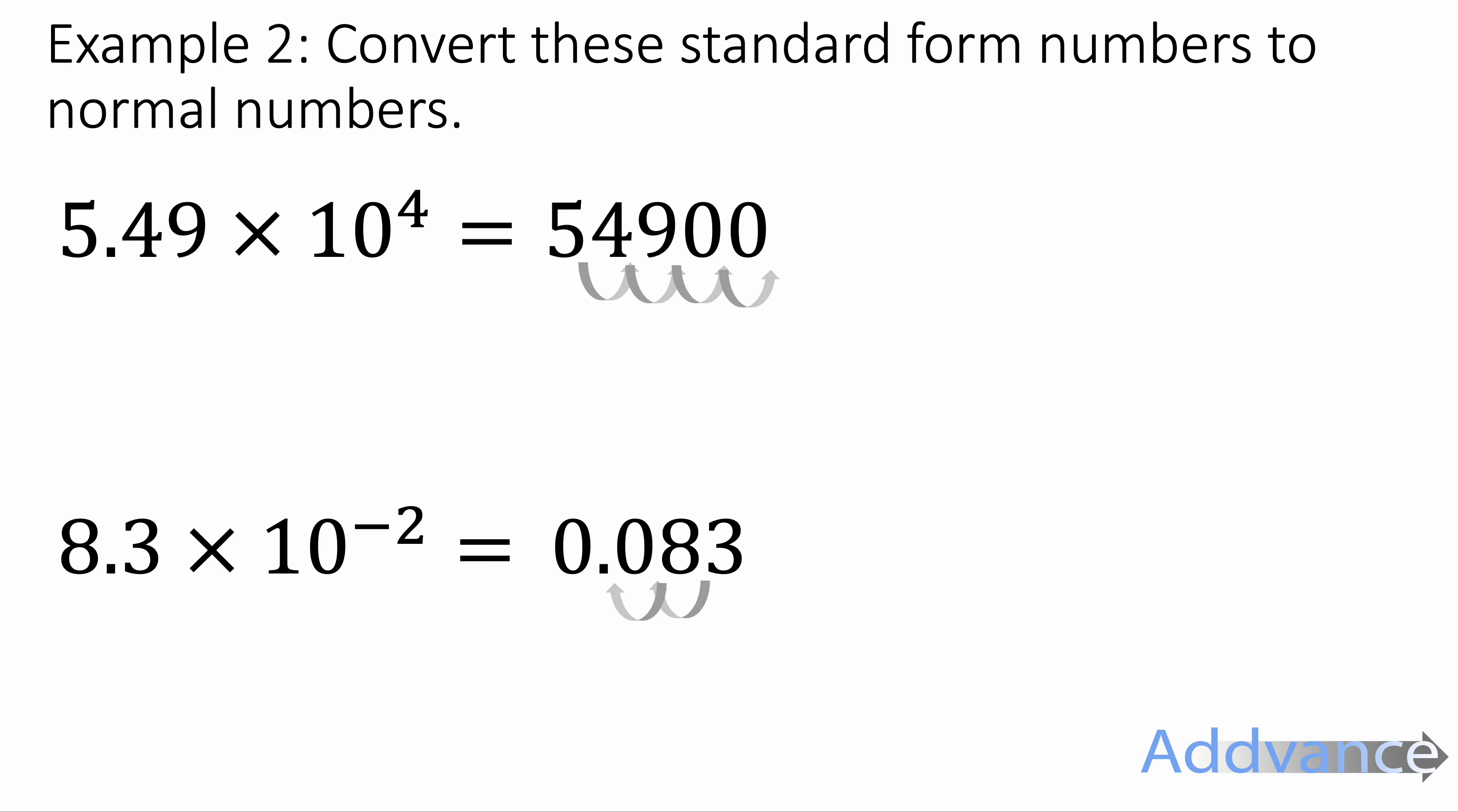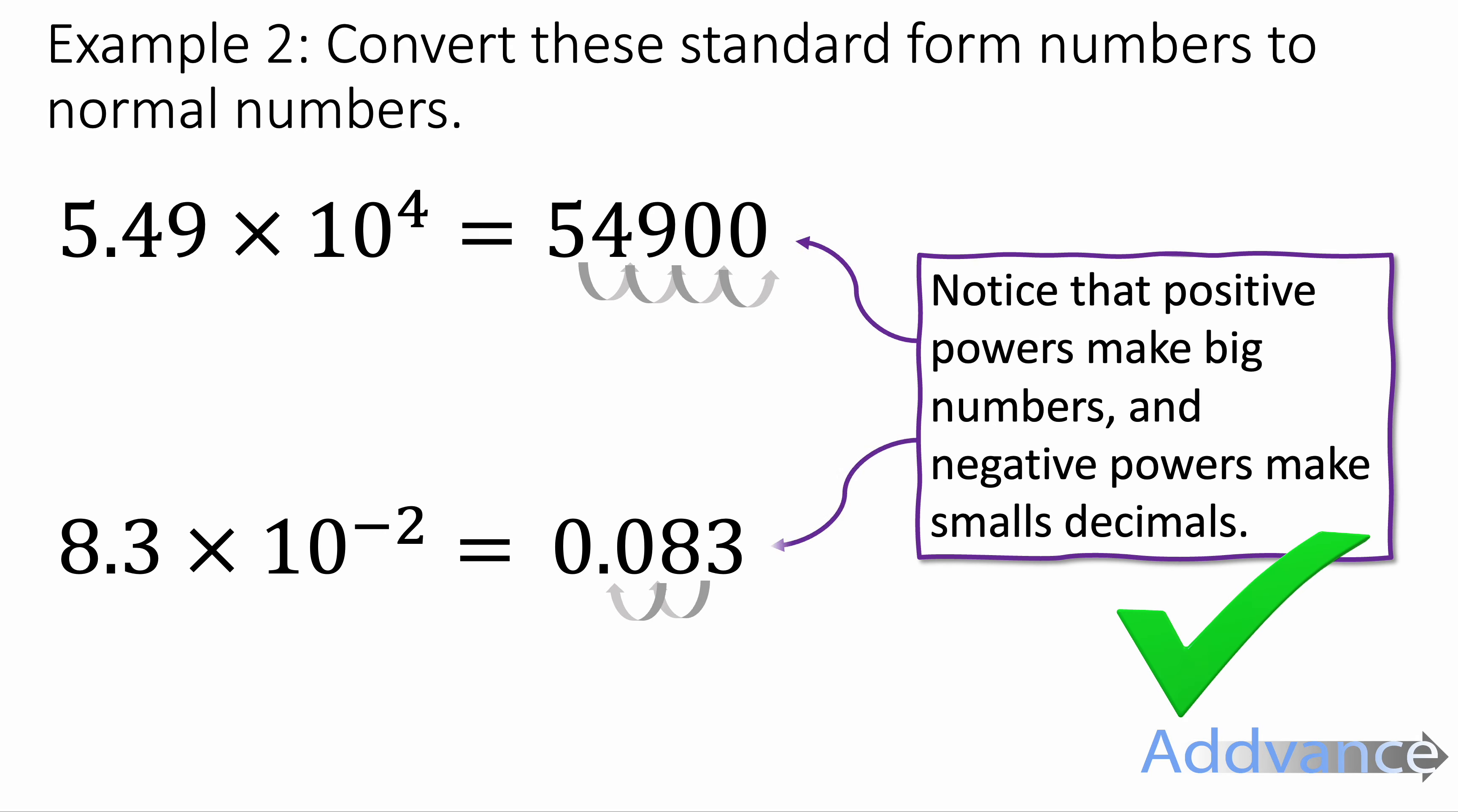Now 8.3 times 10 to the minus 2. 8.3, move the decimal 2 places and fill in the missing digits with zeros. And I get 0.083. 8.3, 0.083. There. And again, that's correct. That is the final answer.